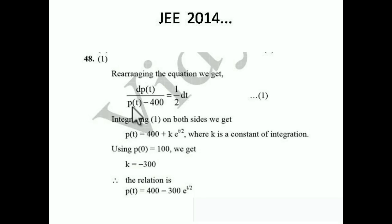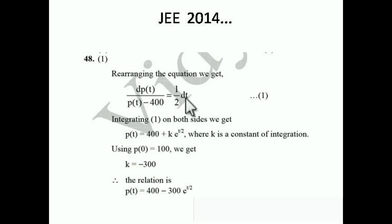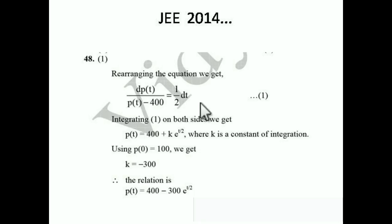In the denominator, the differentiation of p(t) − 400 appears in the numerator, so the integration gives log|p(t) − 400| = (1/2)·t. Taking e to both sides, p(t) − 400 = k·e^(t/2), where k is the constant of integration. So the equation becomes p(t) = 400 + k·e^(t/2).